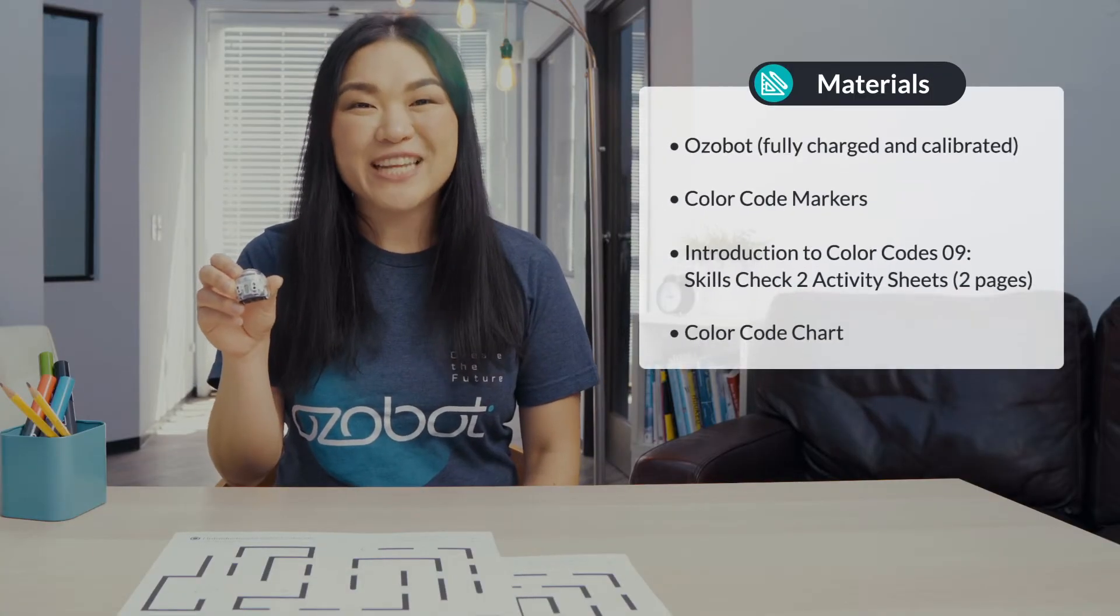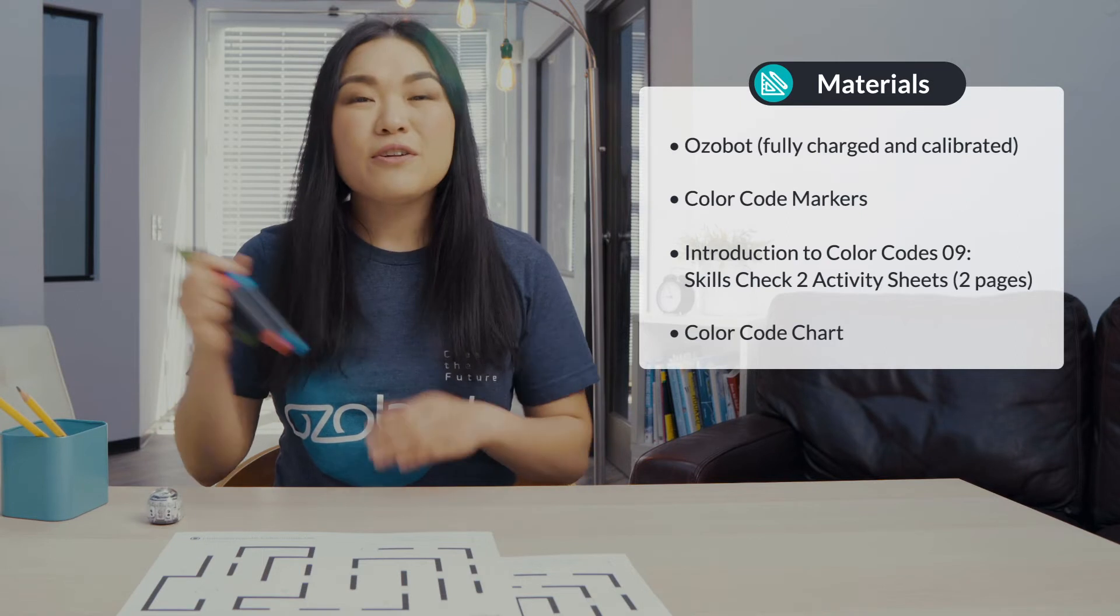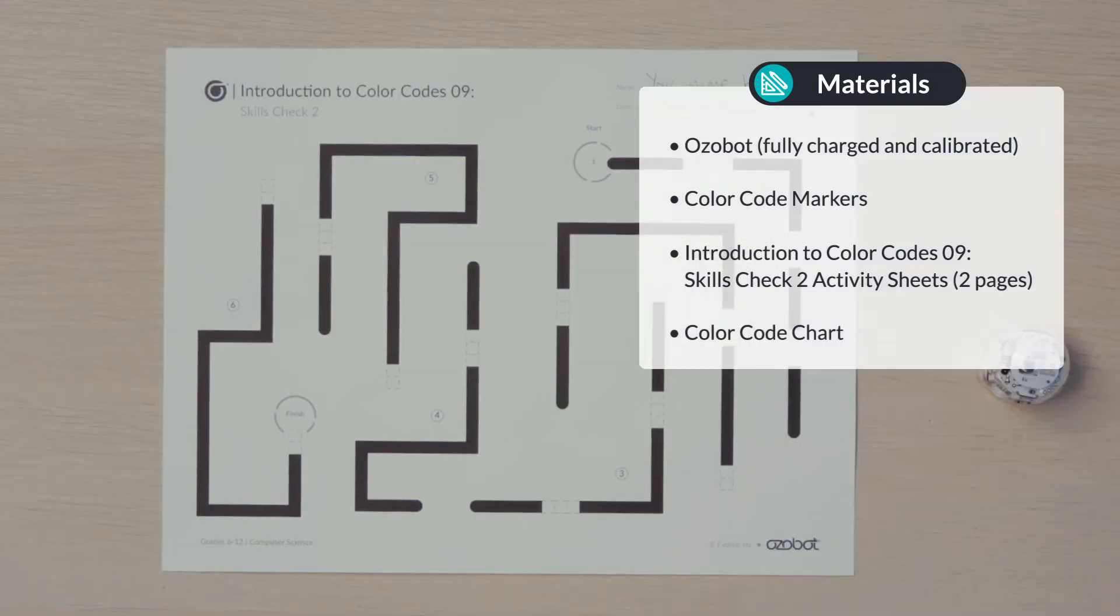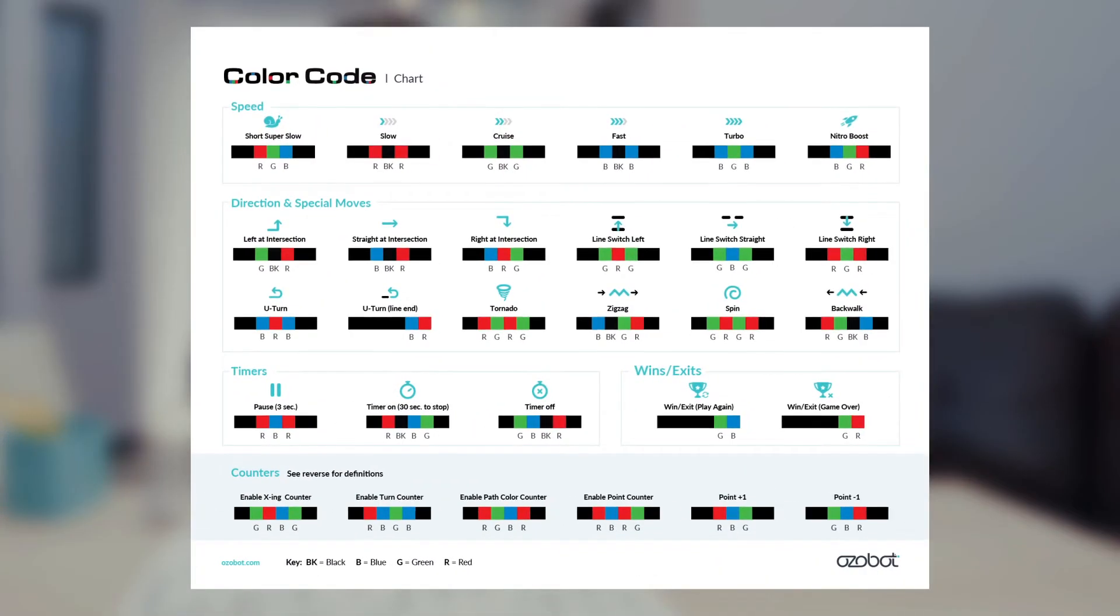For today's lesson, you will need an Ozobot, fully charged and calibrated, color code markers, your Introduction to Color Codes Lesson 9, Skills Check 2, Activity Sheet. Page 1 is required, page 2 is optional, and a color codes chart.